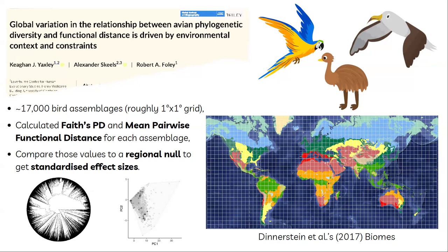The simplest permutation is a tip shuffle — sampling 70 bird species from anywhere on the planet and saying they live here. But that's not a great null because bird distribution is shaped by evolutionary and environmental history. So we used a more conservative regional null, taking Olson et al.'s biomes within each biogeographic region — like South America or North America — and only permuted bird species within a given region and biome.